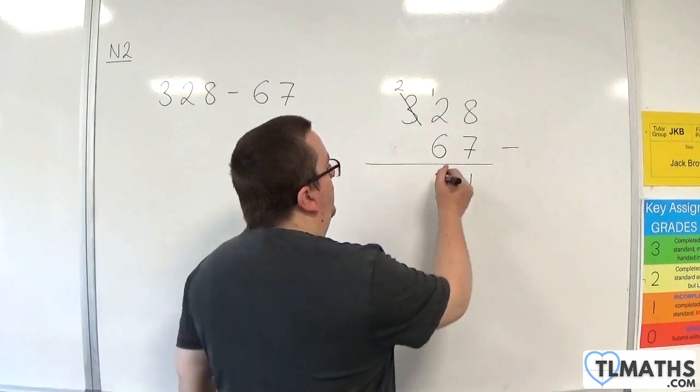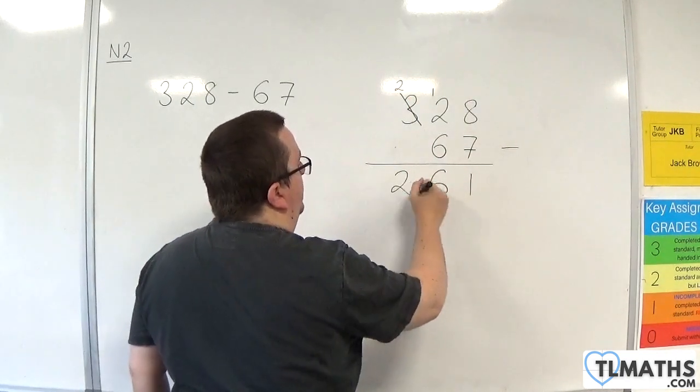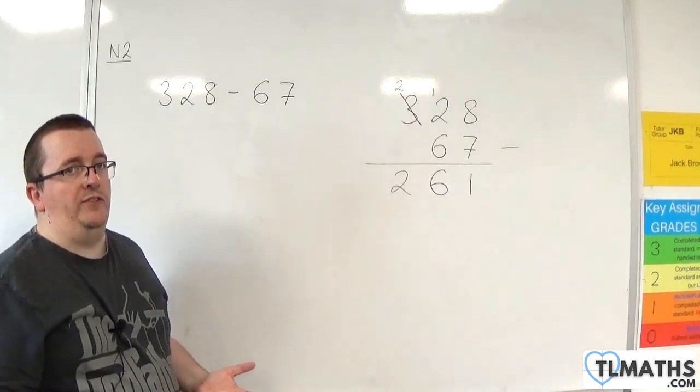12 take away 6 is 6. And then I've got 2 take away nothing, which is 2. So my answer is 261.